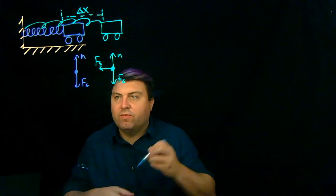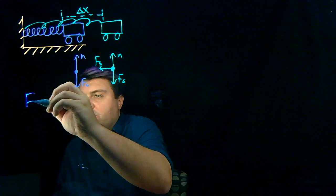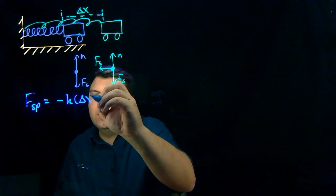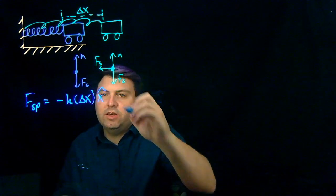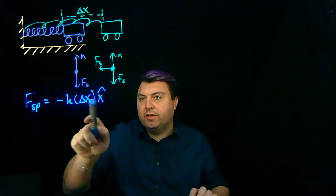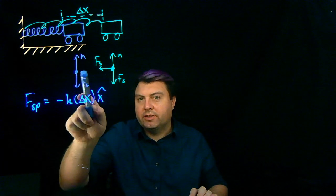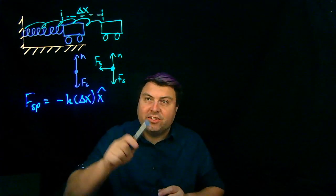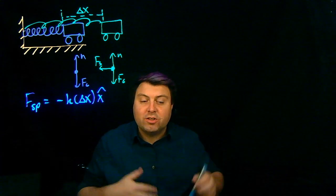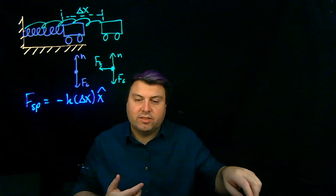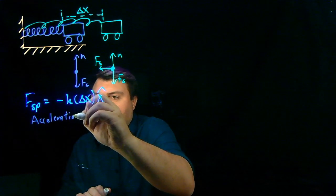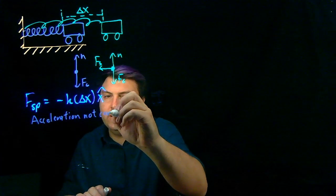So let's remind ourselves what the force from a spring is, is negative k delta x in the x hat direction. So as we move from here to here, this delta x keeps changing. So as it changes, then the force changes, and thus then the acceleration changes. So we don't have a constant acceleration. So acceleration is not constant.